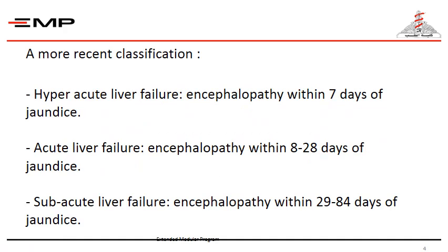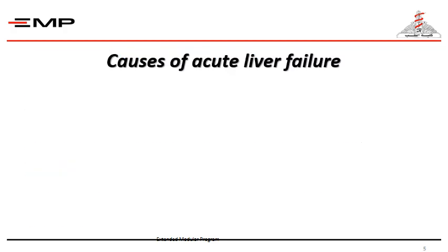A more recent classification depends on the period between the appearance of jaundice and encephalopathy. Hyper-acute liver failure is when encephalopathy occurs within seven days of jaundice; acute liver failure when encephalopathy occurs within eight to 28 days; and sub-acute liver failure when encephalopathy occurs within 29 to 84 days of jaundice.